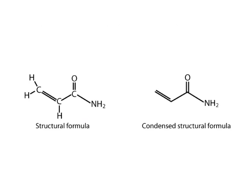I want to briefly take the opportunity and just show you these diagrams here. This is a regular structural formula — it shows every single atom in the molecule and it shows the bonds, double and single bonds. Over here is what's called a condensed structural formula. Basically, what you leave out are the carbons and most of the hydrogens. In a condensed format, it's a very simple way for a chemist to draw a molecule. What you need to know is that at the end of every line and at the intersections of lines, there will always be carbons.